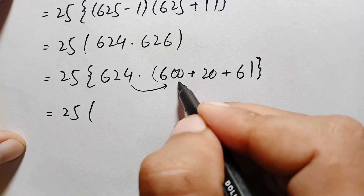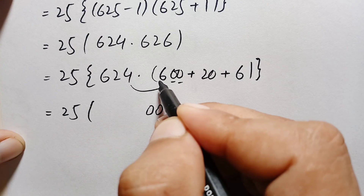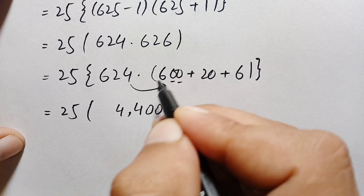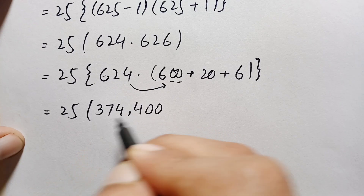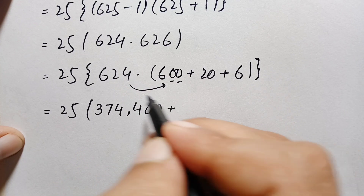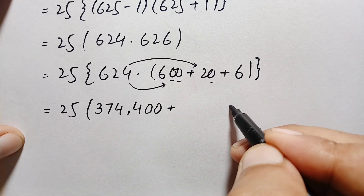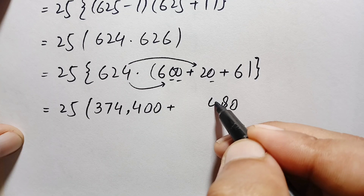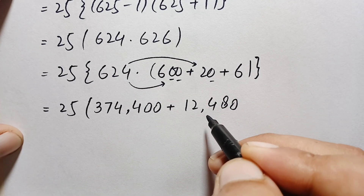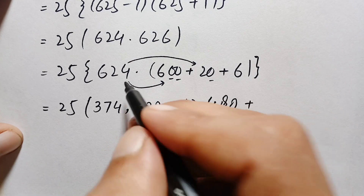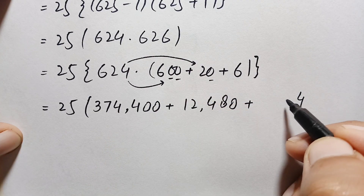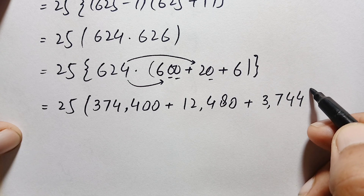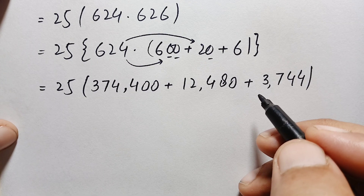Multiplying 624 by 600: 6 times 4 is 24, carry 2; 6 times 2 is 12, plus 2 is 14, carry 1; 6 times 6 is 36, plus 1 is 37. This gives 374,400. Multiplying 624 by 20: 2 times 4 is 8, 2 times 2 is 4, 2 times 6 is 12. This gives 12,480. Multiplying 624 by 6: 6 times 4 is 24, carry 2; 6 times 2 is 12, plus 2 is 14, carry 1; 6 times 6 is 36, plus 1 is 37. This gives 3,744. Now let's add these three numbers, then multiply the result by 25.